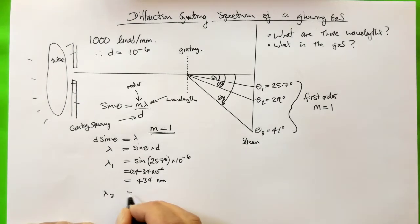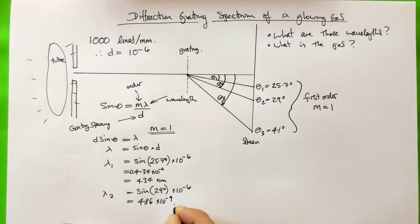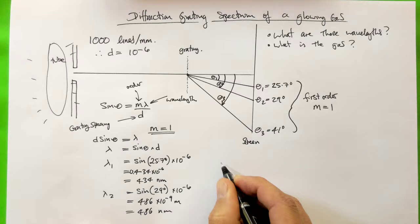Lambda two equals the sine of 29 degrees times ten to the minus six. And this one is going to give us 486 times ten to the minus nine metres, which equals 486 nanometres.